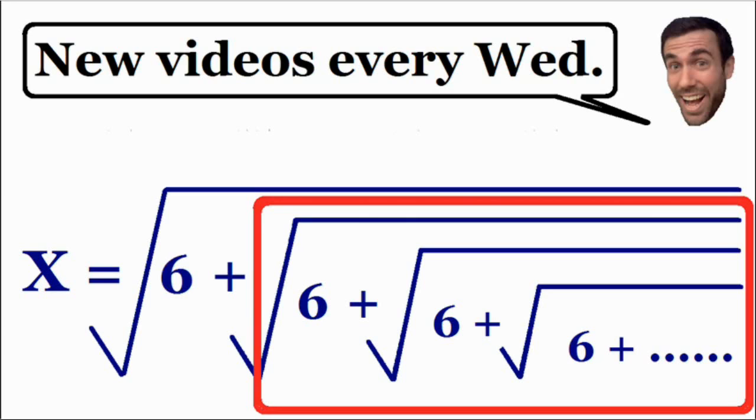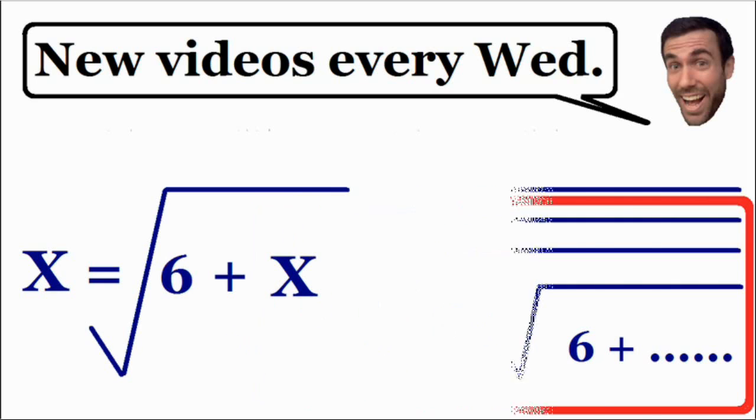This red area is exactly the same as x. X is also equal to the square root of 6 plus, inside that square root, we have the square root of 6, and the pattern is repeated forever and ever. So since they are exactly the same, we can substitute an x into the red area.